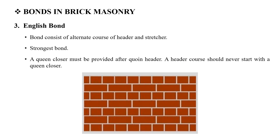The English bond is important — it consists of alternate courses of headers and stretchers. This is extremely important for exams. The alternate courses of headers and stretchers form the structure, with headers placed at corners and stretchers along the course.